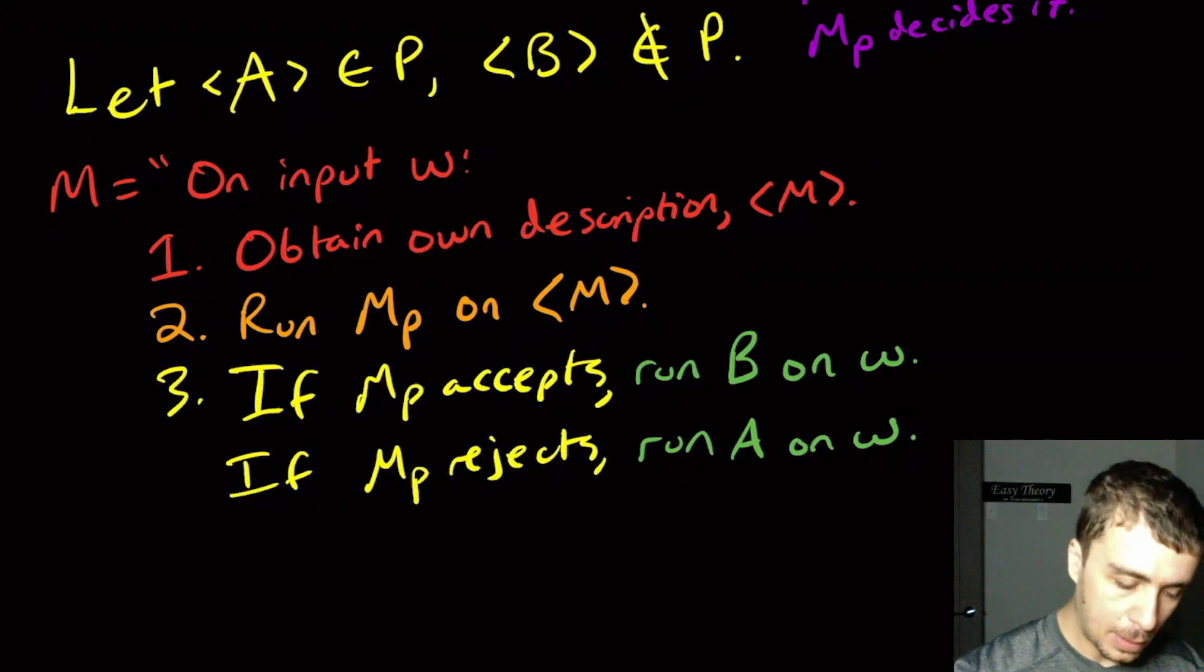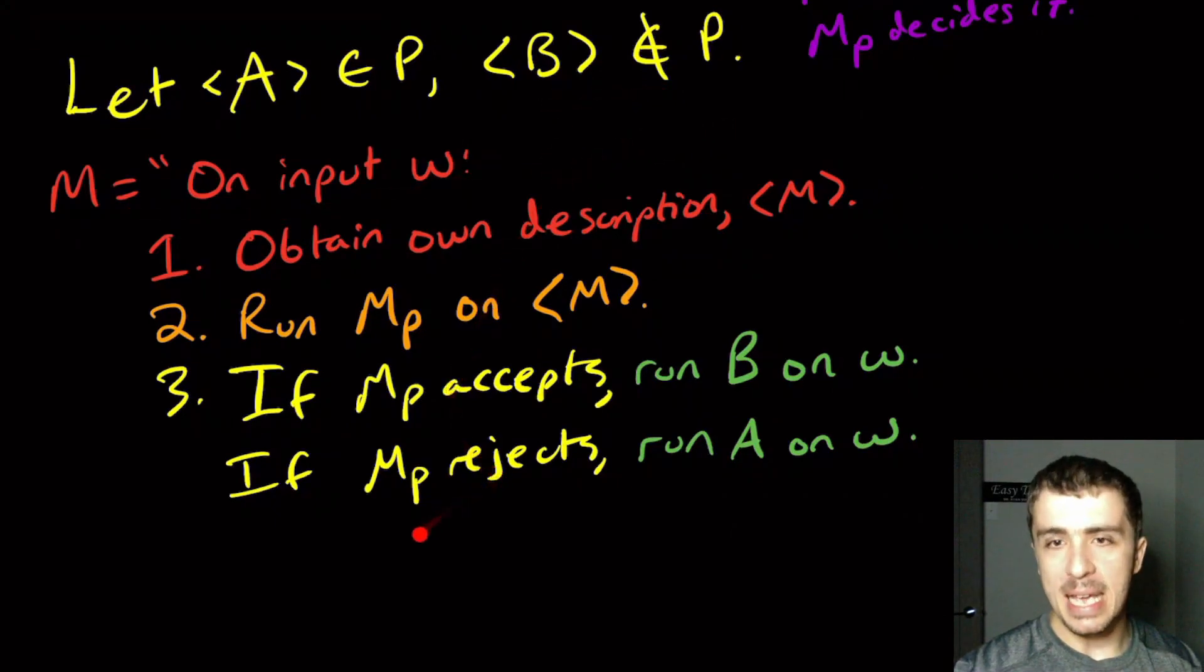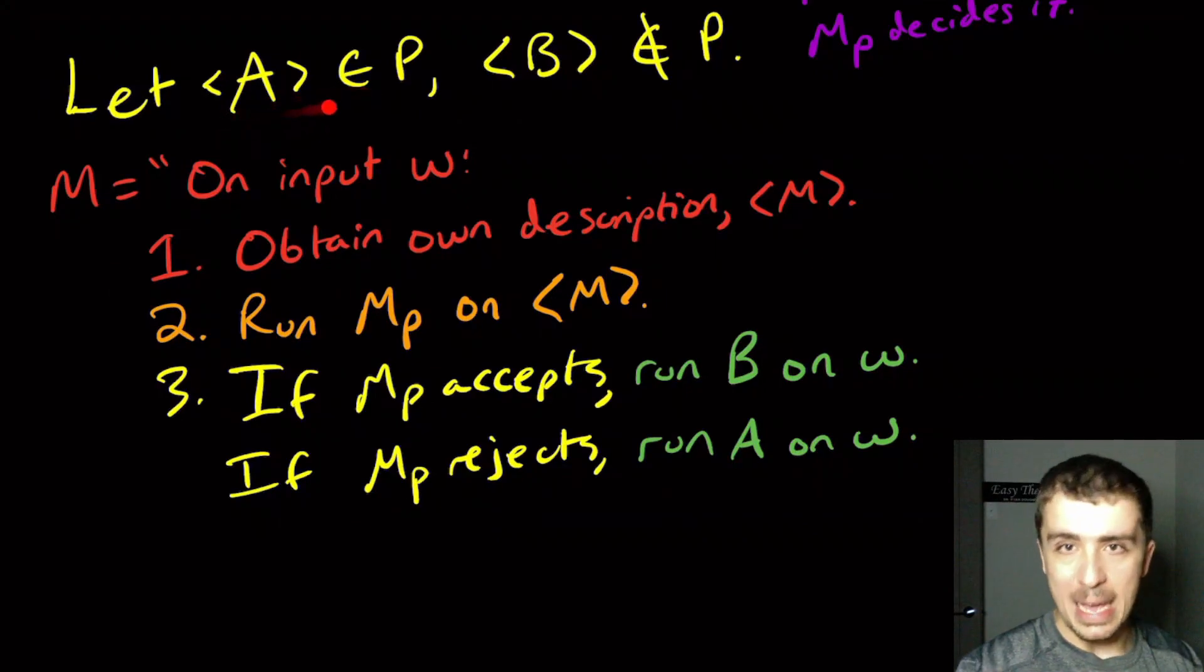Let's go through the logic there. If MP rejects, that means M does not have the property, so it's effectively equivalent to B in this case. That means if we want a contradiction, we want to run A on W.